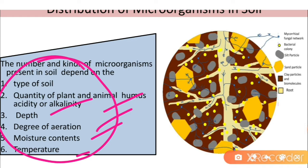Without these factors, microorganisms cannot survive in the soil. When they are present in the soil, they provide important things to it — such as nutrients, temperature regulation, and pH balance. Because of that, soil fertility occurs and this fertile soil improves plant health.